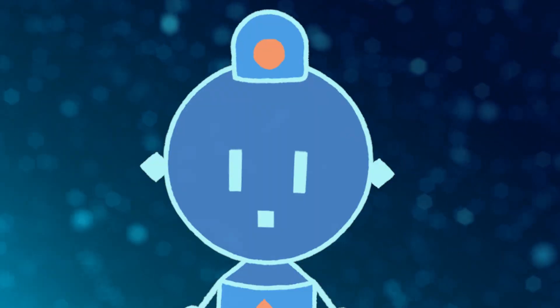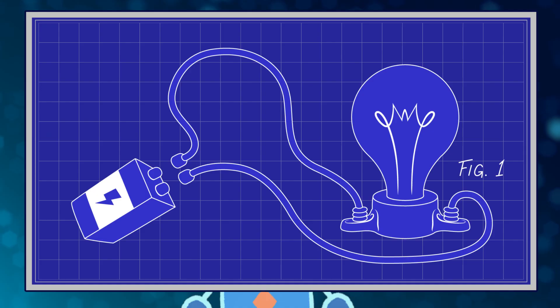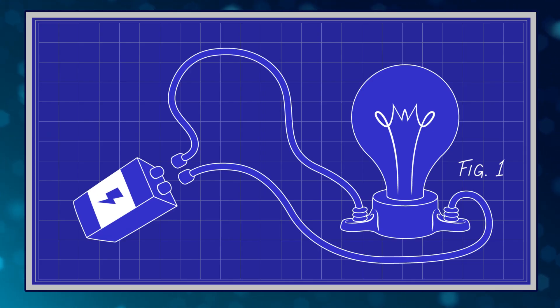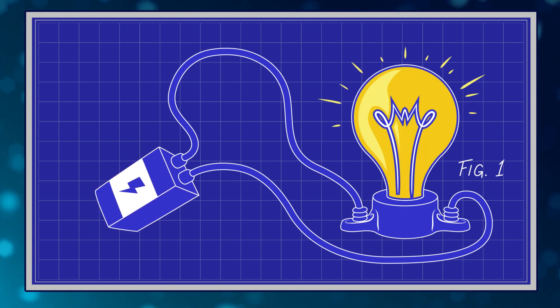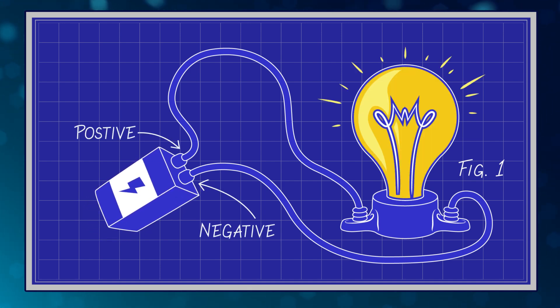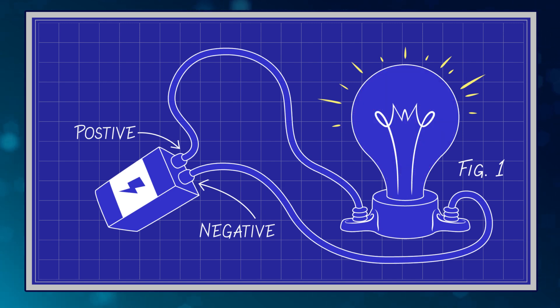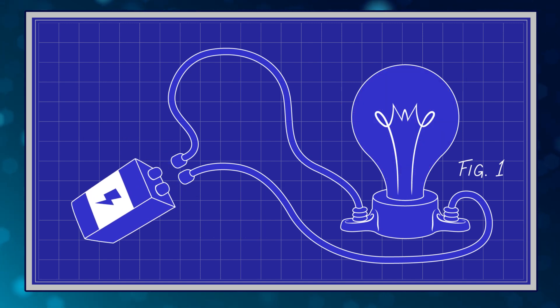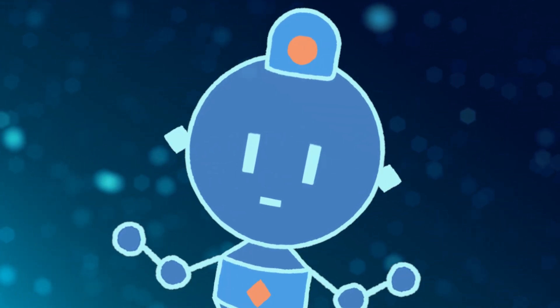Let's look at a simple circuit since that's the kind of circuit I'll be fixing today. A simple circuit consists of at least one power source, like a battery. There's also an electrical component, like a light bulb. Also, there's a conducting wire that carries the electric current between them. That's right, which means I have to figure out how to get this circuit to have a complete path.